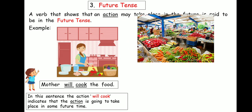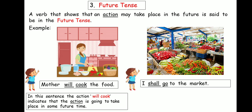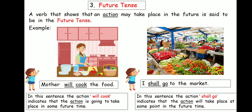Let's take another example. This is a marketplace. The child says: 'I shall go to the market.' She has not gone to the market, nor is she in the market now, but she says she shall go. The action 'shall go' indicates that the action will take place at some point in the future. So both these sentences show that the actions will take place in the future, and both are in the future tense.